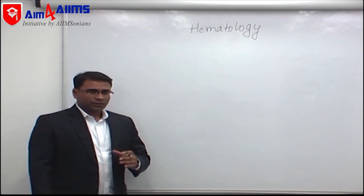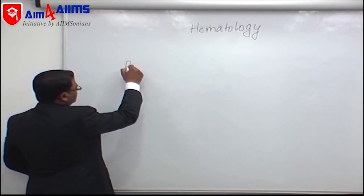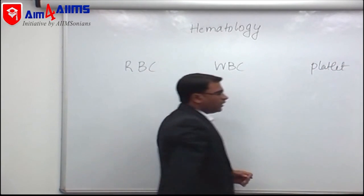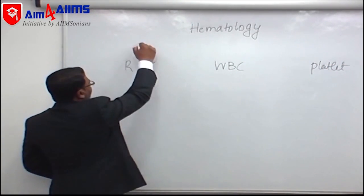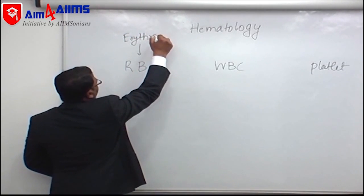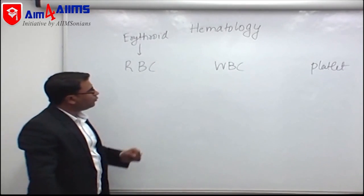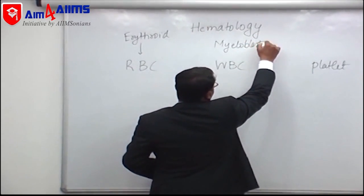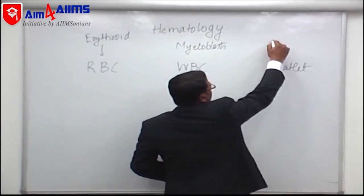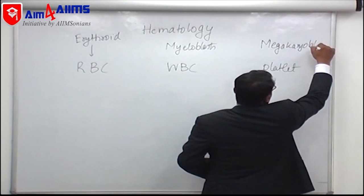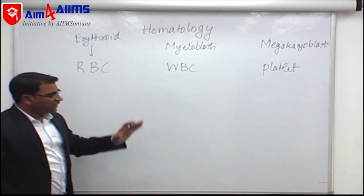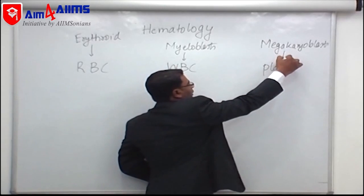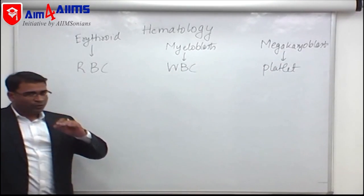We are starting with the topic of hematology. The full hematology concept revolves around three basic cells: RBC, WBC, and platelets. RBC originates from erythroids (erythroblasts), WBCs have their origin from myeloblasts (myeloids), and platelets originate from megakaryoblasts. It should be clear that RBCs come from erythroids, WBCs from myeloblasts, and platelets from megakaryoblasts.